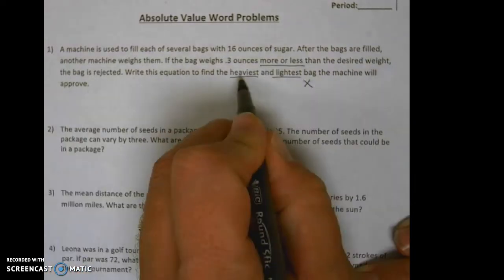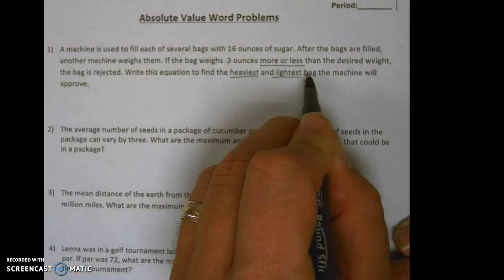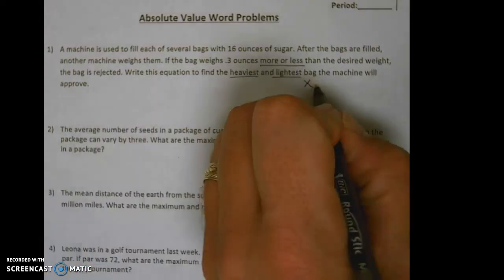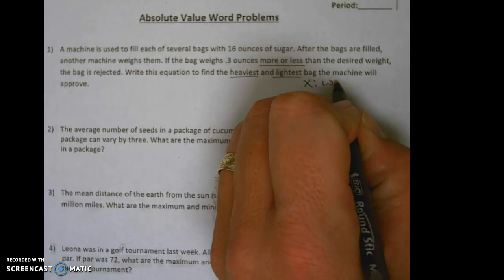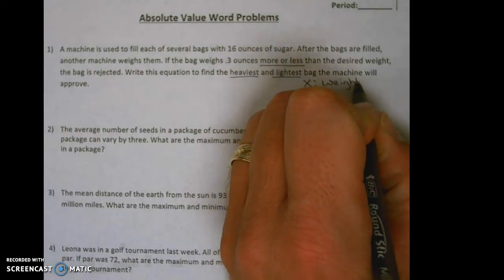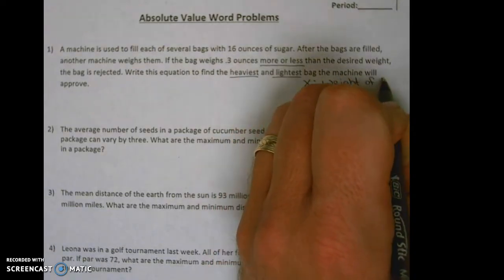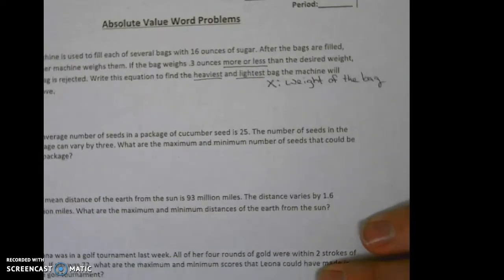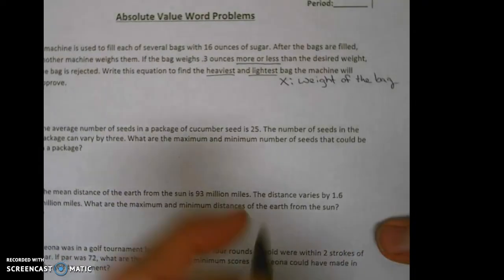We're going to go ahead and use x, and it's going to represent the weight of the bag. So we're going to go ahead and fill it with 16 ounces of sugar. The weight of the bag.